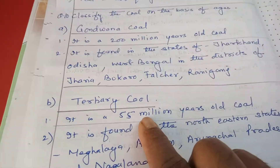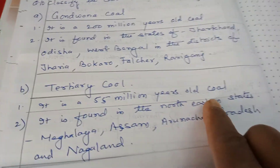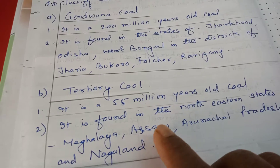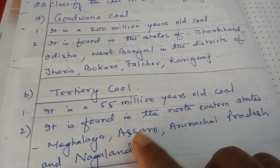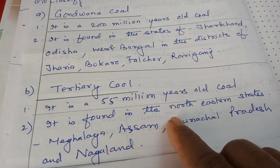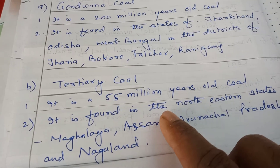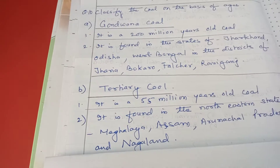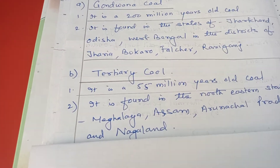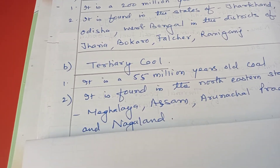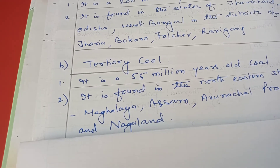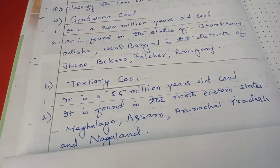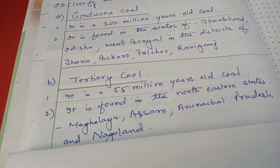Then there is tertiary coal, which is 55 million years old and much younger than Gondwana coal. It is found in the northeastern states of Meghalaya, Assam, Arunachal Pradesh, and Nagaland. In this way, coal is classified by age into Gondwana coal and tertiary coal — the Deccan Plateau region contains Gondwana coal and the northeastern region contains tertiary coal.